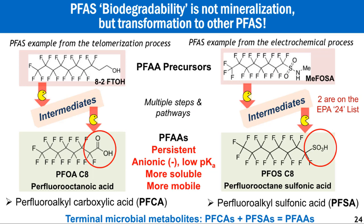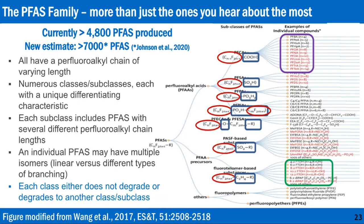Thanks, Ned. So first, getting back to this PFAS family — per and polyfluoroalkyl substances — the latest count is over 7,000, and as more and more manufacturers try to create replacement compounds, which are also PFAS, that number will continue to grow.